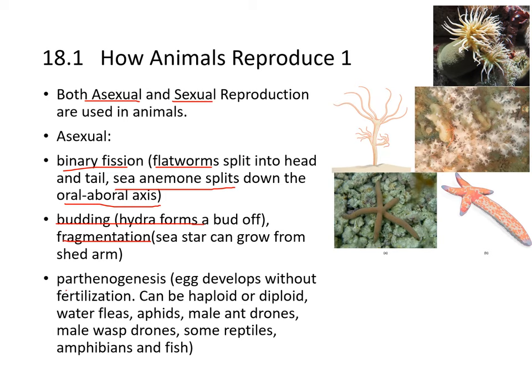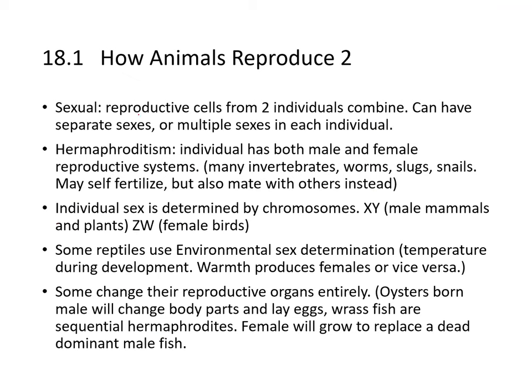Animals also use parthenogenesis, where an egg develops without fertilization — it can be haploid or diploid. Water fleas, aphids, male ant drones, male wasp drones, and some reptiles, amphibians, and fish utilize this method.